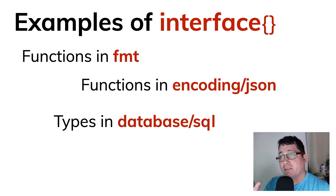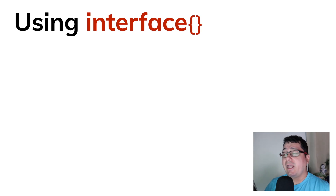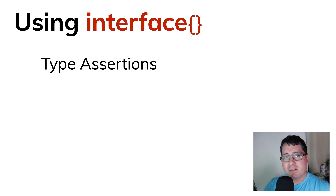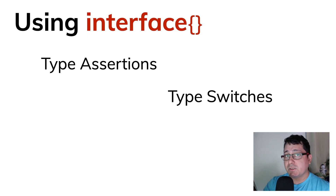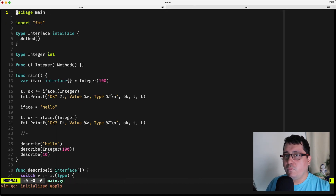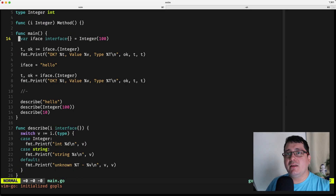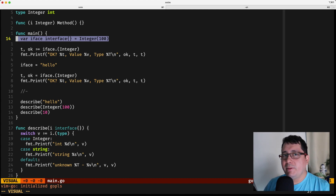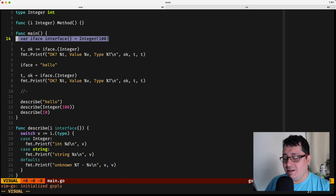There are two ways to use the empty interface. You can use it to pass in unknown values, but when doing so you need to define type assertions or type switches to differentiate and determine what type is being received. Here in main.go we have a variable called iface instantiated to an integer — a custom type that refers to the int type from the standard library. Any type in Go implements the empty interface because the empty interface doesn't define any methods.